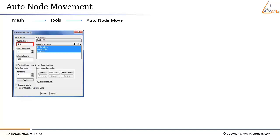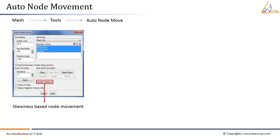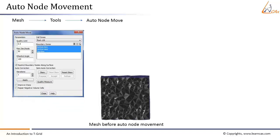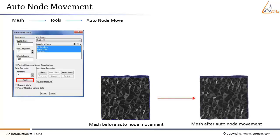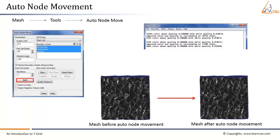The step-by-step procedure for using the Auto Node Move panel: select the appropriate cell zone from the cell zones list. Under Parameters, provide the appropriate quality limit and enable the option to restrict boundary nodes along surface. Under Quality Measure, retain the skewness-based node movement method. Click Apply to improve mesh quality. After auto node movement the mesh is updated, and mesh quality info is reported in the console window. Note that there may not be significant improvement in overall quality using the current set of options.